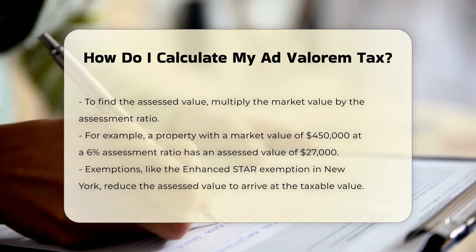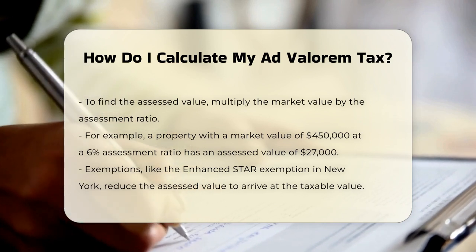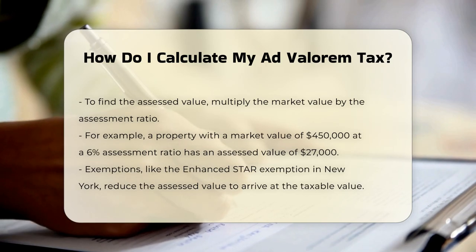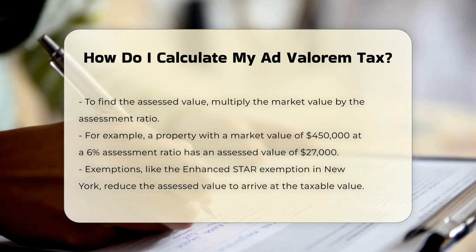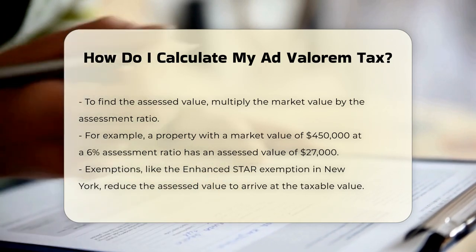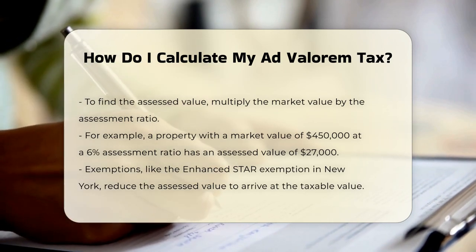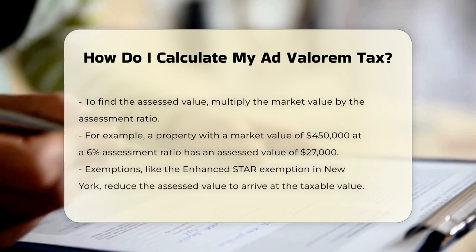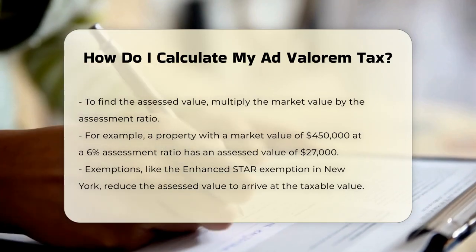Step three: Applying exemptions. If the property has any exemptions, such as the Enhanced Star Exemption in New York, these are subtracted from the assessed value to get the taxable value. For example, if the assessed value is $27,000 and the exemption is $3,460, the taxable value would be $23,540.